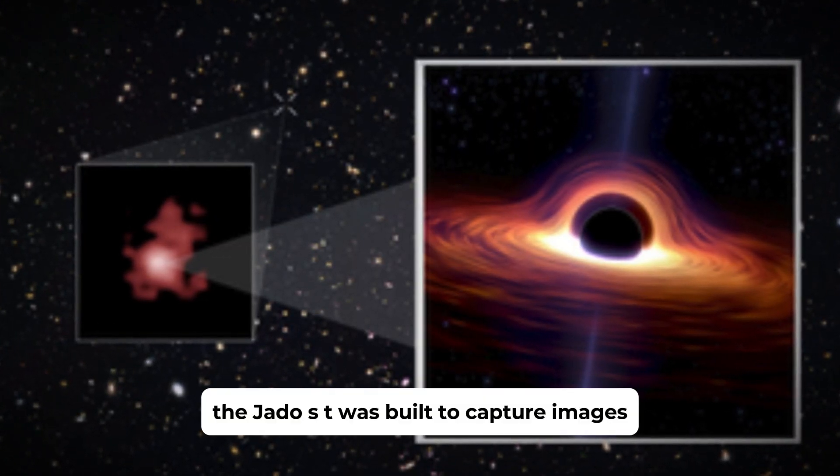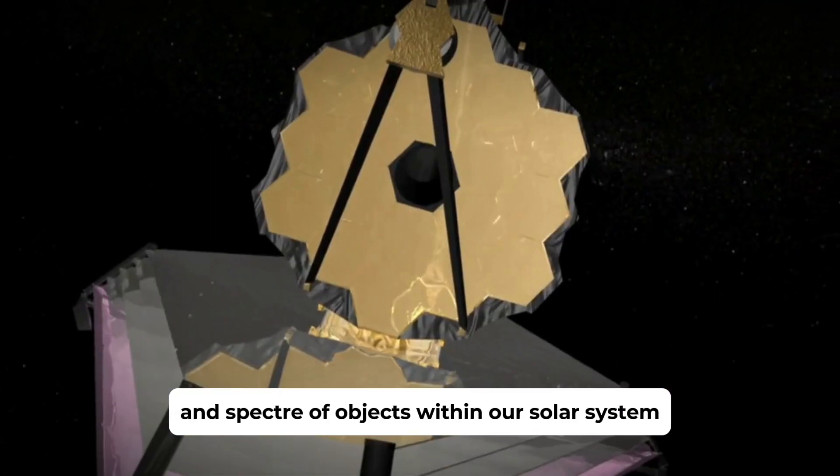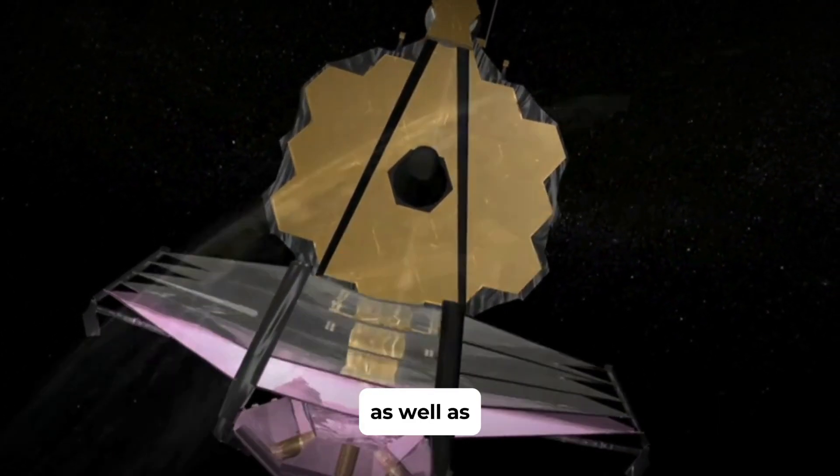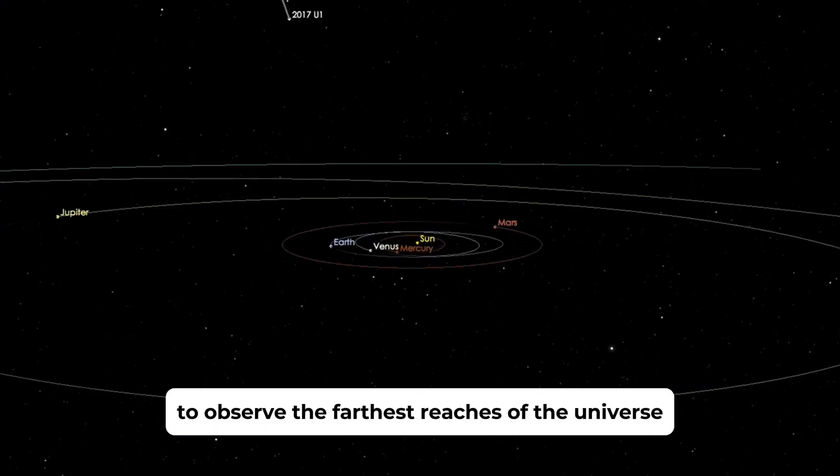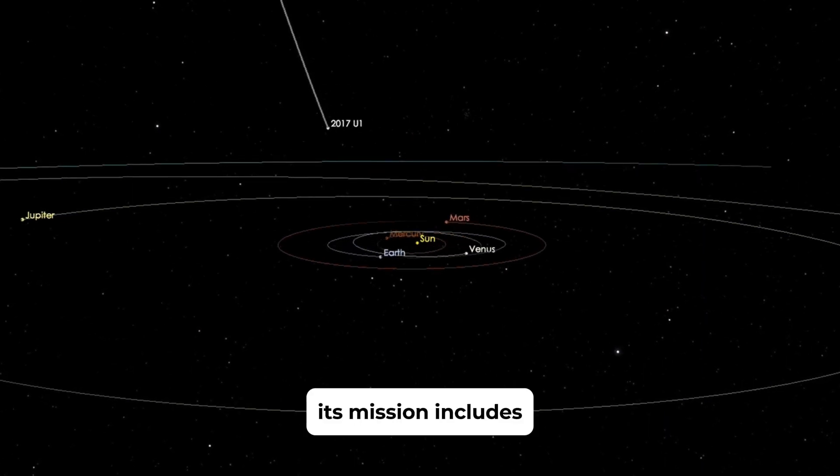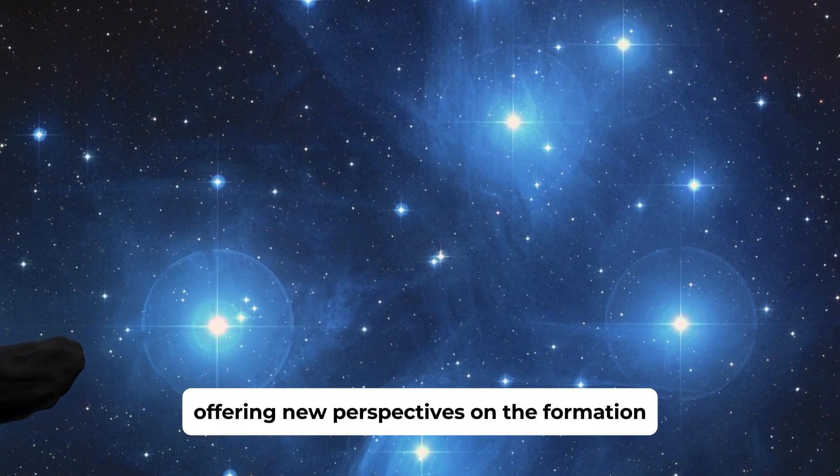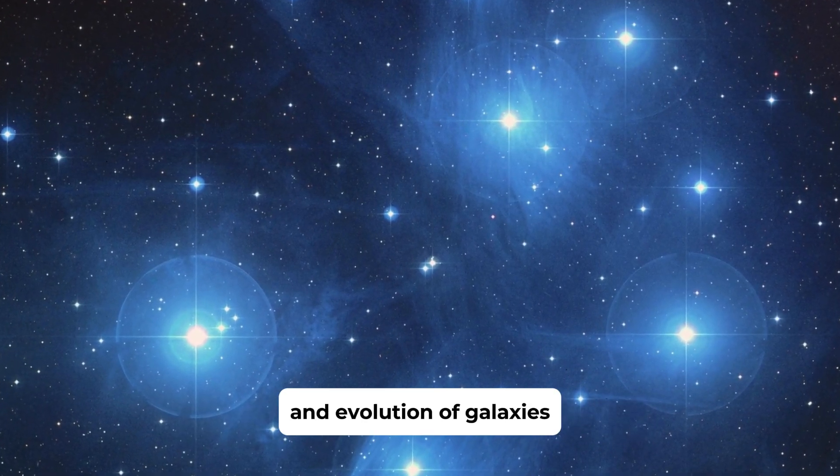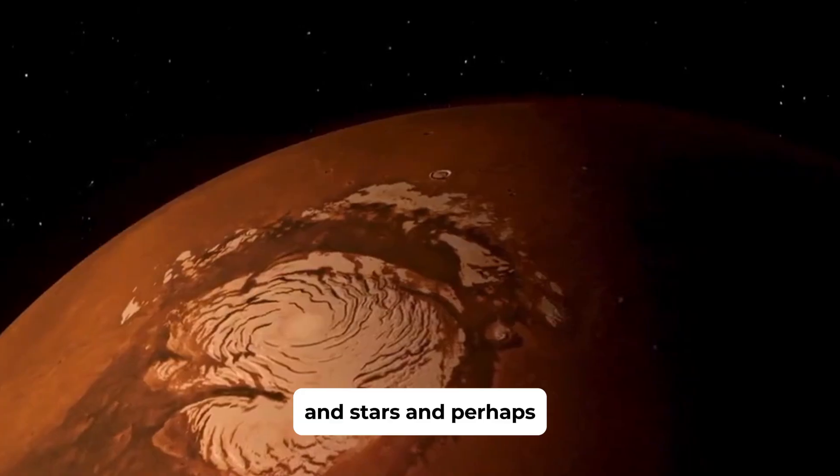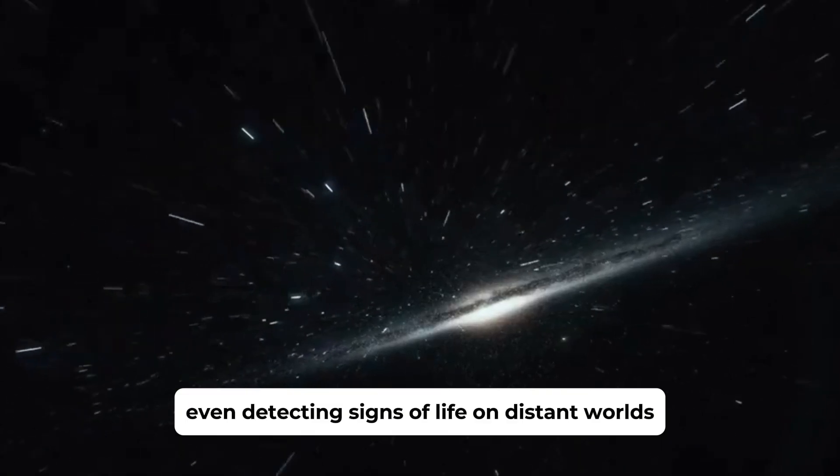The JWST was built to capture images and spectra of objects within our solar system as well as to observe the farthest reaches of the universe. Its mission includes investigating the atmospheres of exoplanets, offering new perspectives on the formation and evolution of galaxies and stars, and perhaps even detecting signs of life on distant worlds.